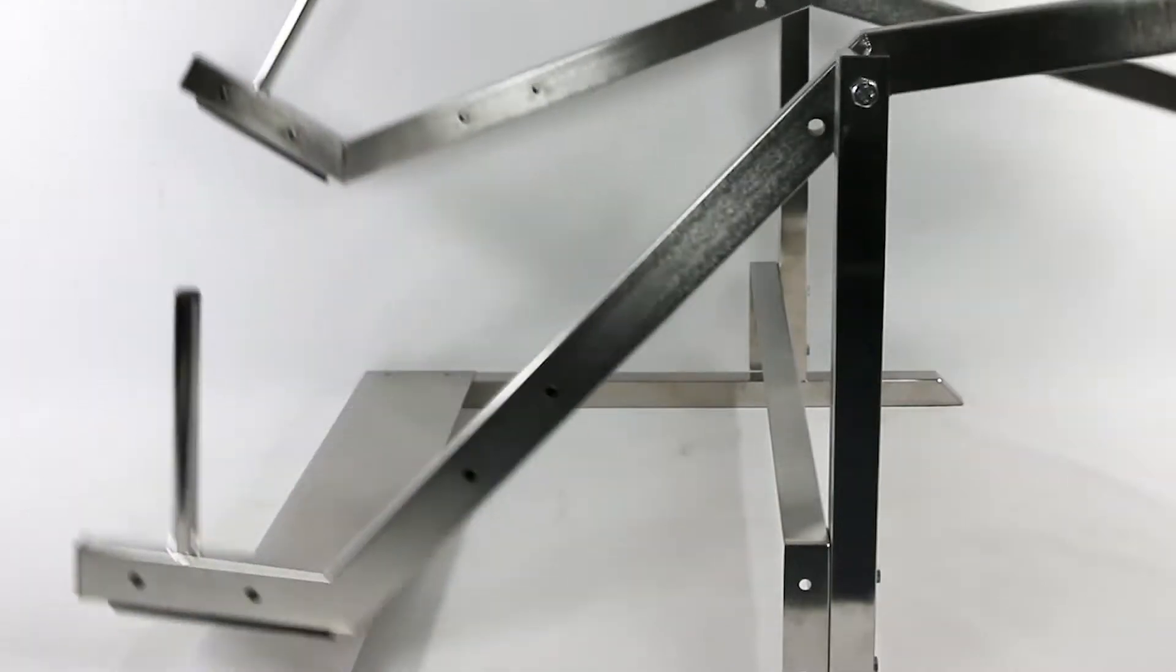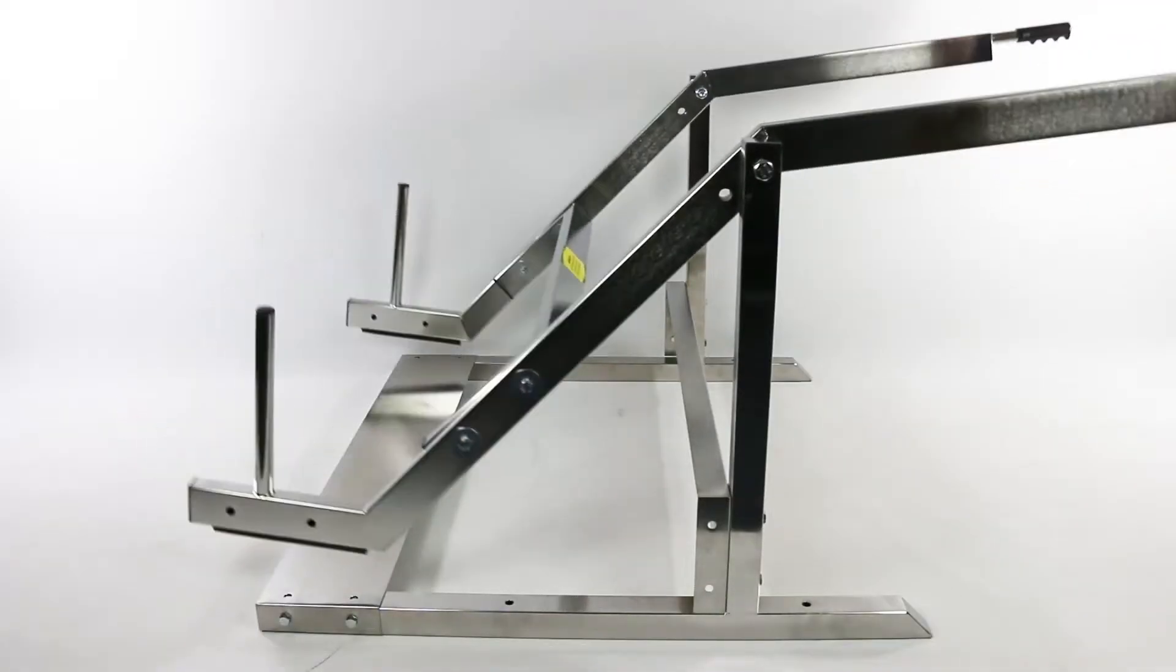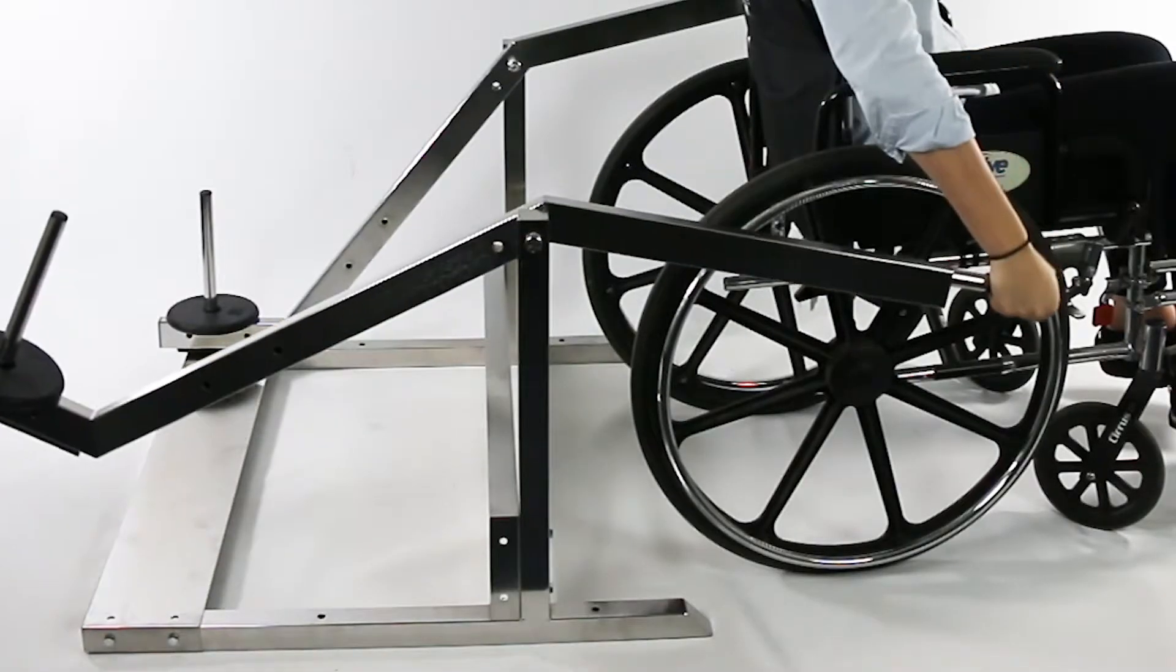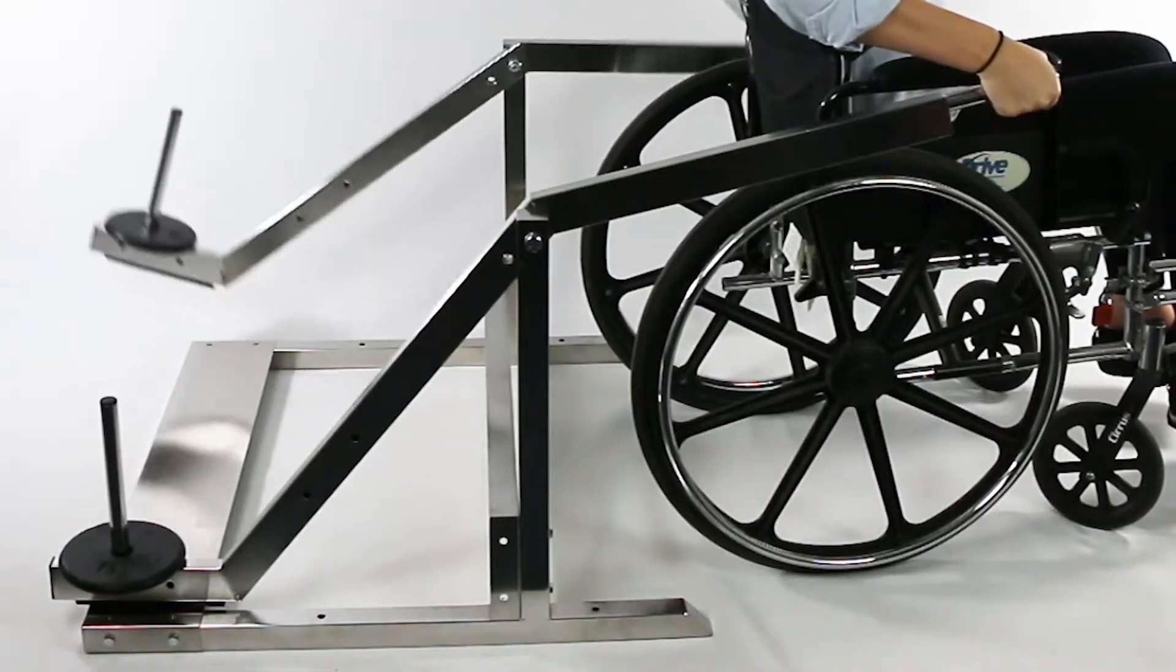The arms of the rickshaw exerciser can move independently or in tandem. The cross piece locks the two arms together so that they work in tandem. Consult with a therapist to find out if tandem or independent movements are best for you.